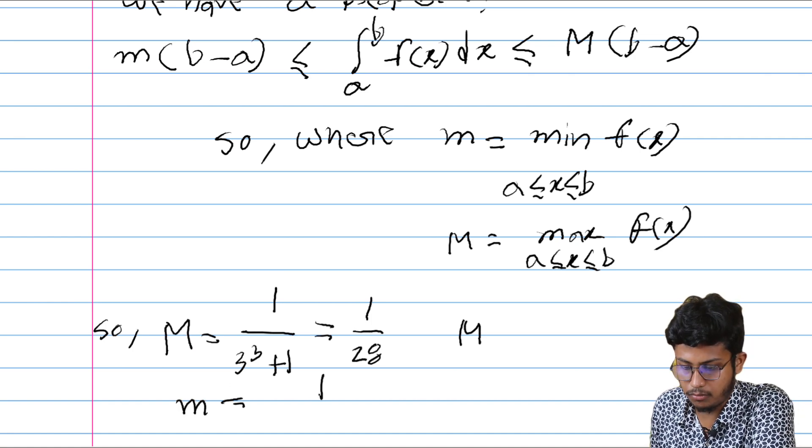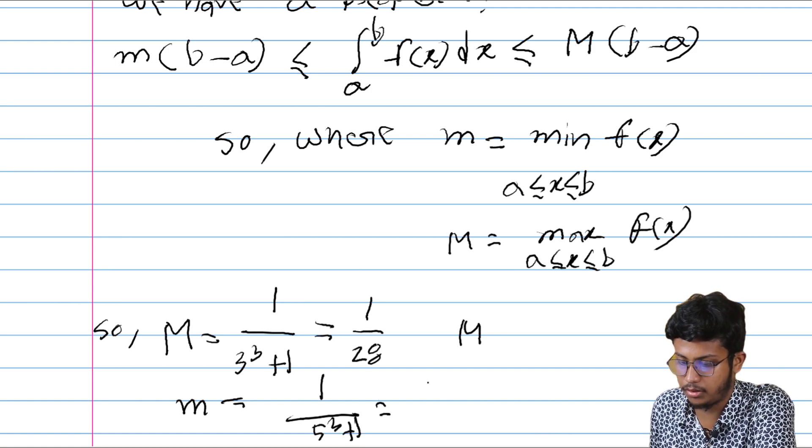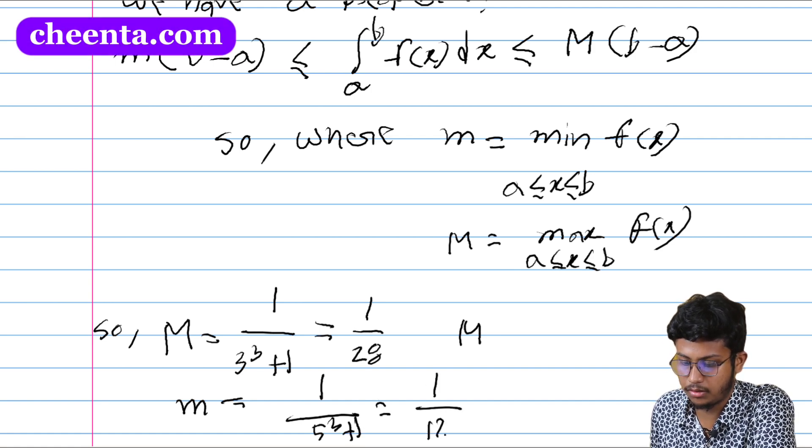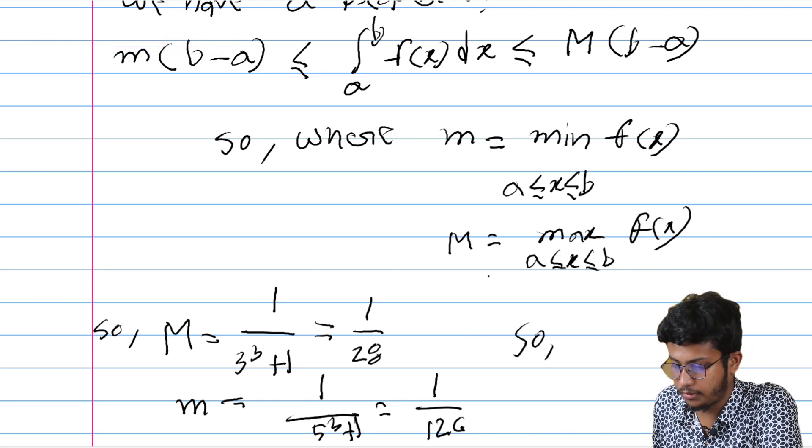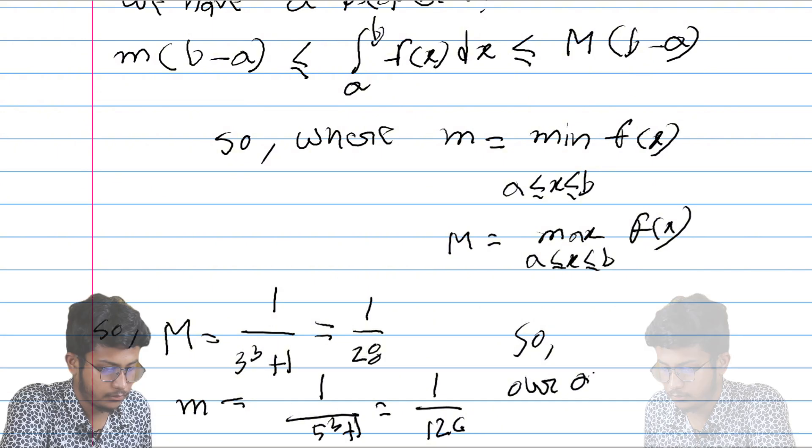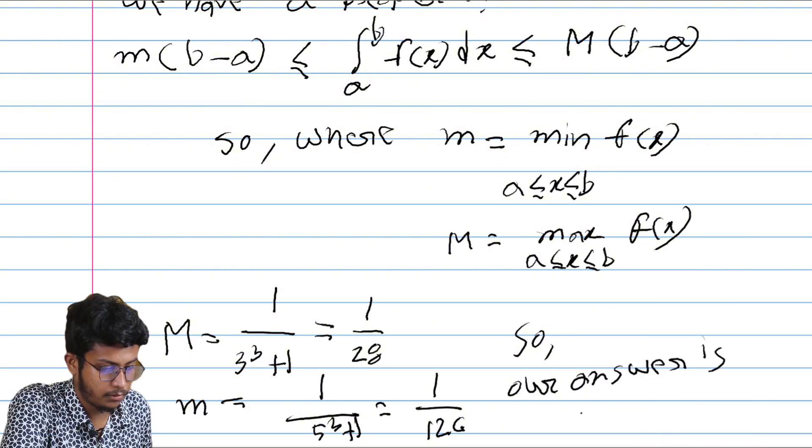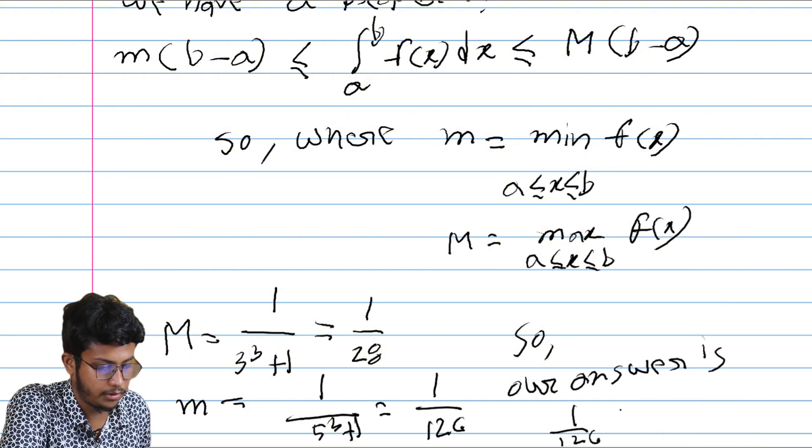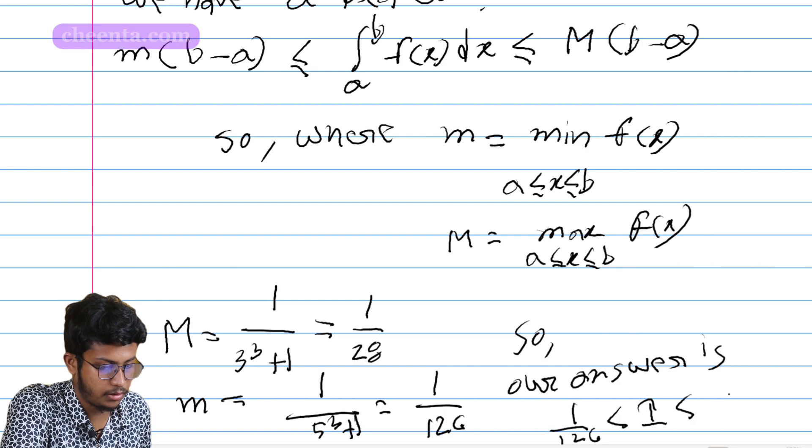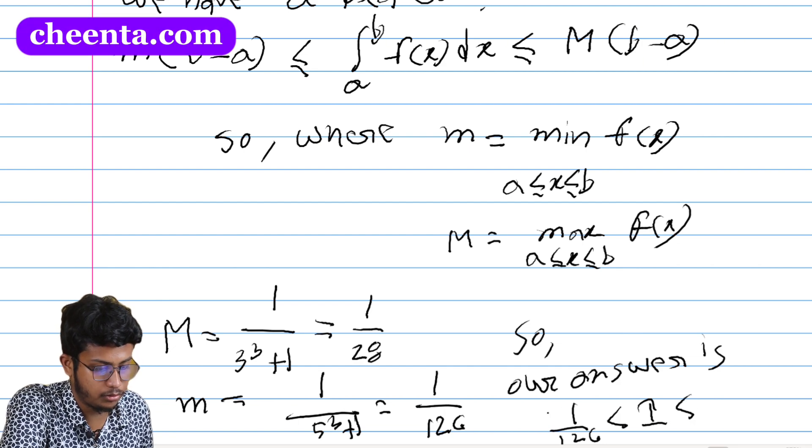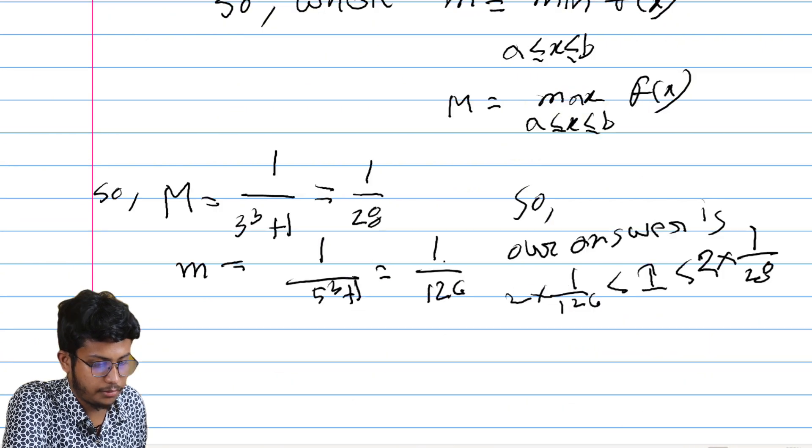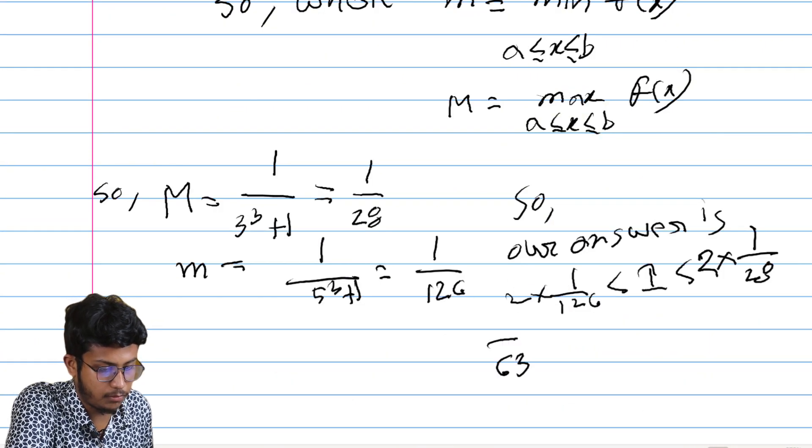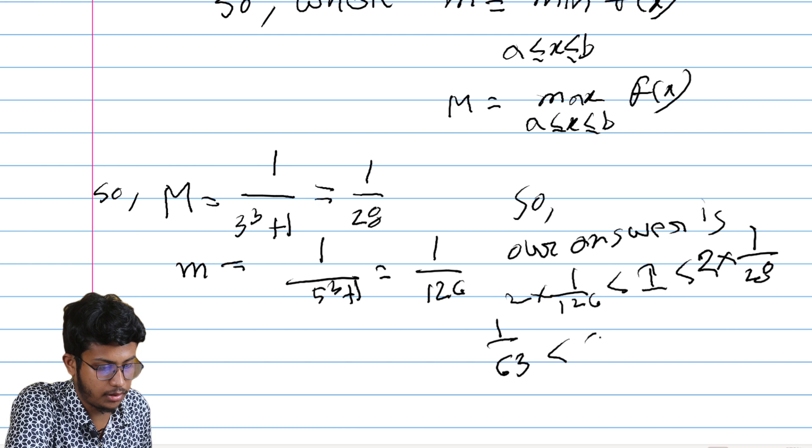So again, okay our answer is 1 by 126 less than I less than into 2, 2 into 1 by 28. So that is equal to 1 by 63 less than I less than 1 by 14.